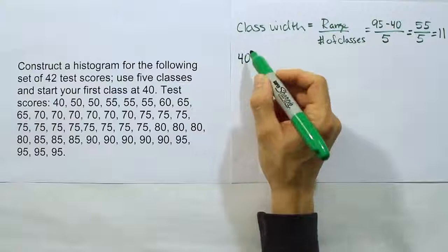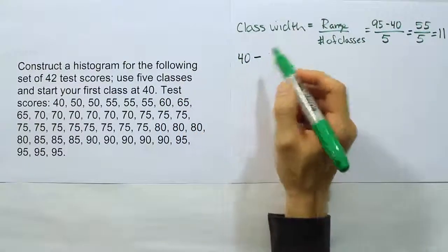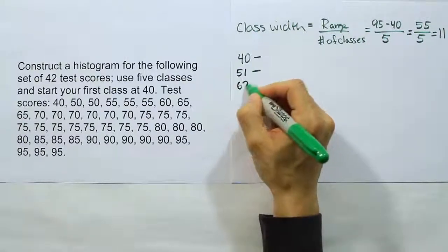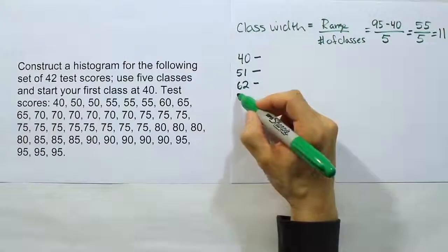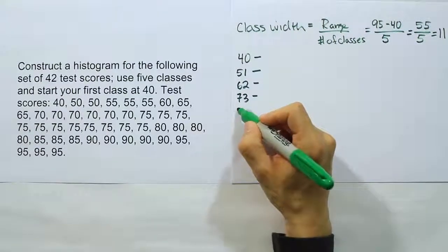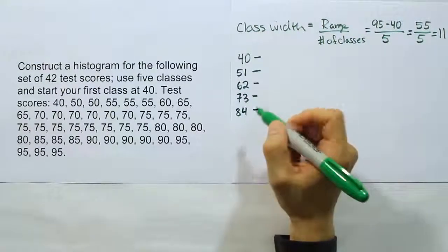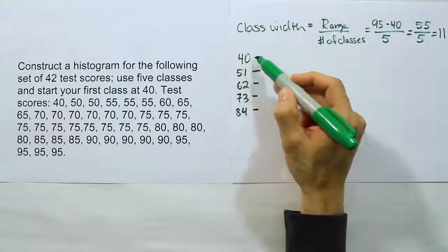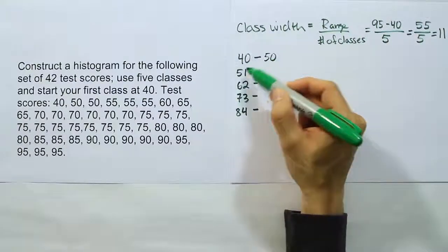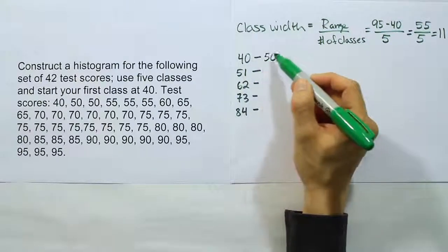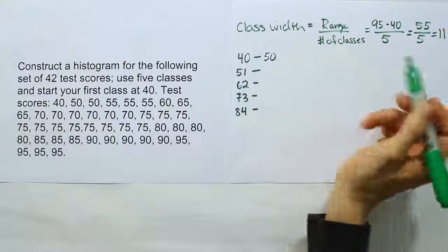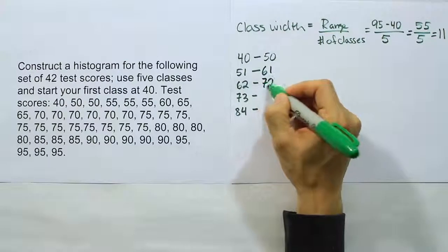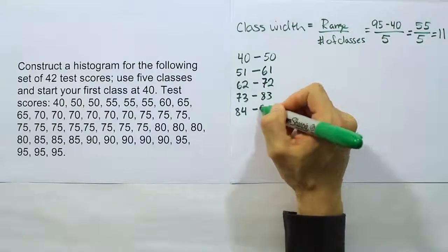If we were to start at 40, like they asked us to, and I add 11 to 40, I will get 51. If I add 11 to that, I will get 62. If I add 11 to that, I will get 73. If I add 11 to that, I will get 84. When I come over here to get the other side of these categories or these classes, this 40 will go up to 50. I have to end this one before I get there. If I add 11 to that, I'll have 61, and then 72, and then 83, and then 94.